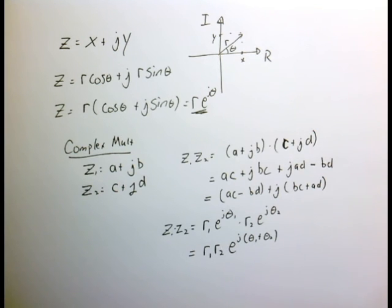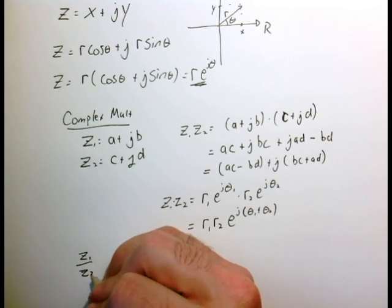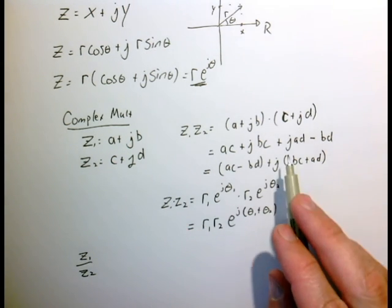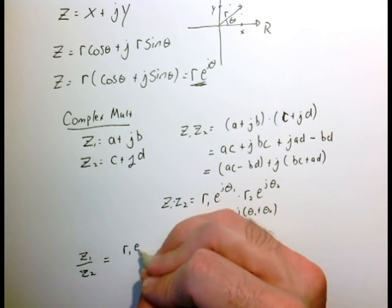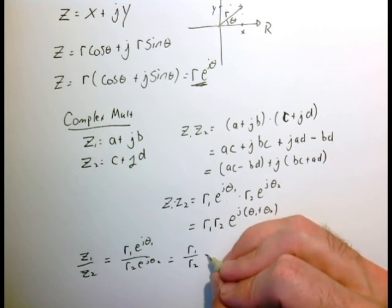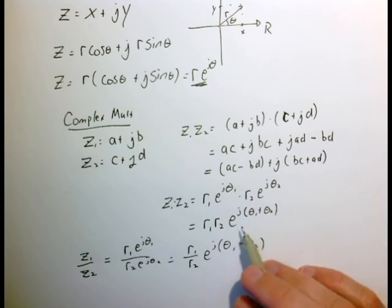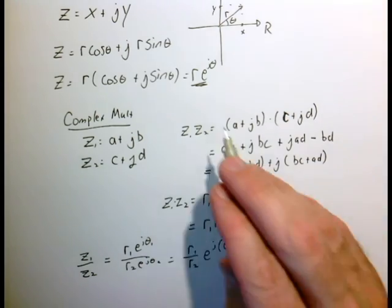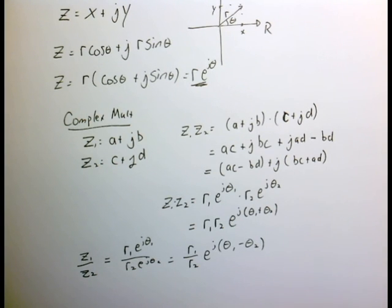Likewise, division is also quite easy in complex notation. For z1 divided by z2, when we divide two complex numbers in polar form, the angles subtract and the r's divide, giving r1 over r2. This is a quick example of complex multiplication and division to show that it's easier to manipulate things in r·e to the j·theta notation rather than the x plus jy notation, and that will become more and more apparent as we move along.